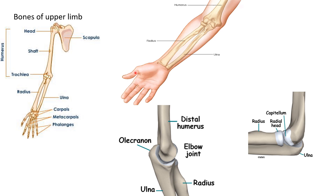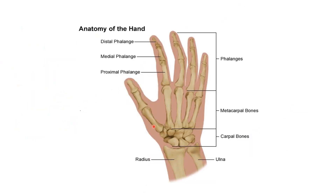The hand is formed of carpal bones, then 5 metacarpal bones, and then the phalanges — proximal phalange, middle phalange, and distal phalange. This is the anatomy of the hand.